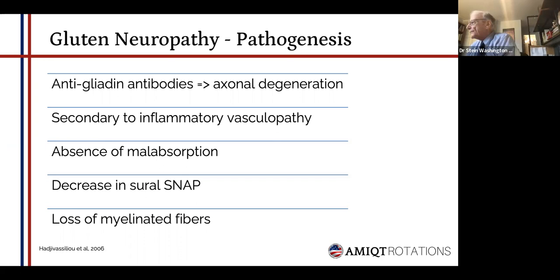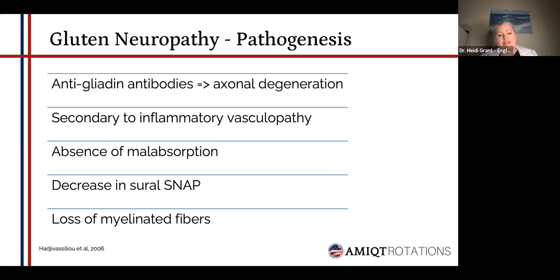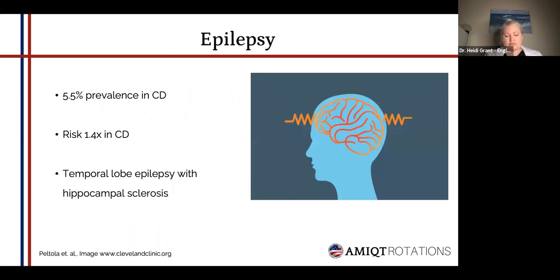One study noted a decrease in sural sensory nerve action potential. And what was quite fascinating is once patients were put on a gluten-free diet, that actually caused an increase again in the sural SNAP, which is quite profound. Again, we also find loss of myelinated fibers with this condition.